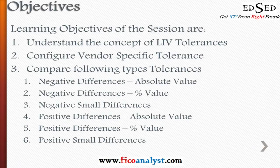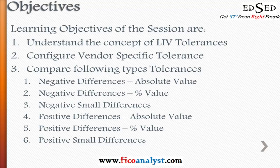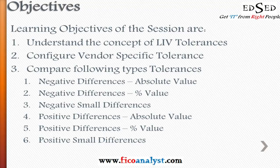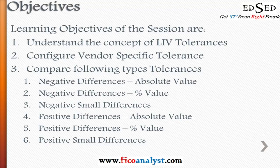The main objective for this session is to understand the concept of logistics invoice verification tolerances, configure vendor-specific tolerances, and compare different types of tolerances — for example, negative differences with absolute and percentage values, negative small differences, positive differences with absolute value and percentages, and positive small differences. When these variances occur, the system checks tolerances and whether to allow or reject them depends on the configuration in place.